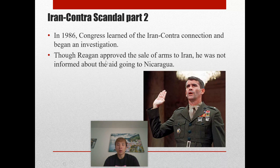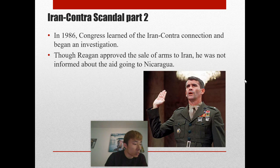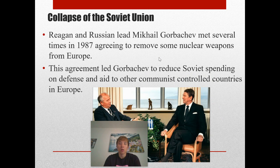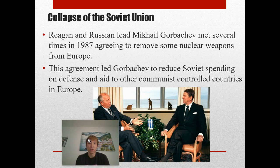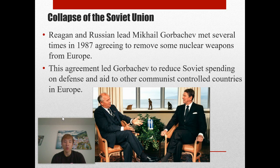Congress learned of the Iran-Contra connection and began an investigation in 1986. Though Reagan approved the sale of arms to Iran, he was found not to have been informed about the aid going to Nicaragua. General Oliver North took the entire blame for that conclusion. As far as other foreign policy matters, Reagan and Soviet leader Mikhail Gorbachev met several times in 1987 to agree to remove some nuclear weapons from Europe. This agreement led Gorbachev to reduce Soviet spending on defense and aid to other communist-controlled countries in Europe, which would later lead to the collapse of the Soviet Union.